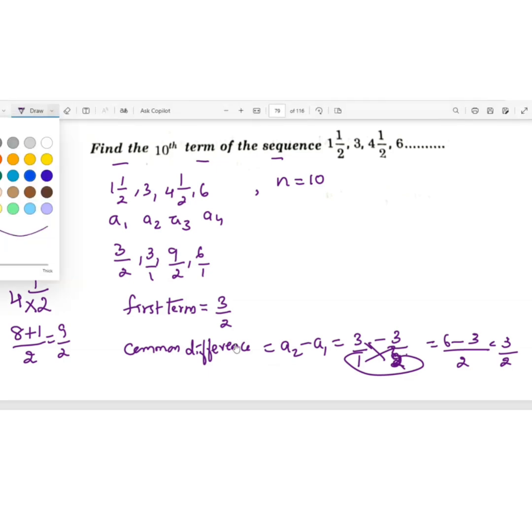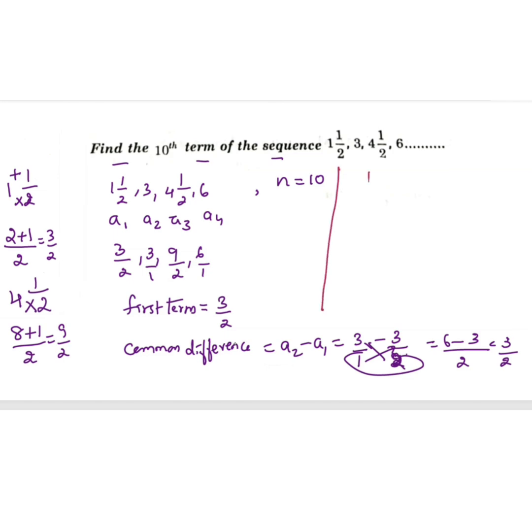Now, we need to find the 10th term. We can write 10th term as A plus N minus 1 into D. So 10th term equals A is 3 by 2 plus N is 10, 10 minus 1 and D is 3 by 2. That's 3 by 2 plus 10 minus 1 is 9 into 3 by 2. That will be 3 by 2 plus 9, 3s are 27 by 2.